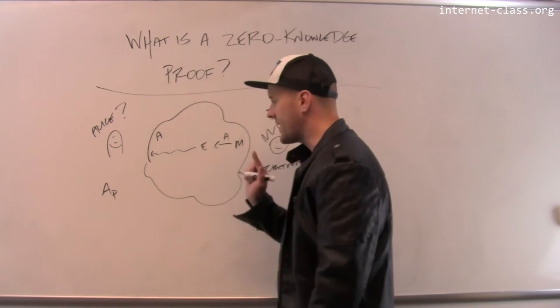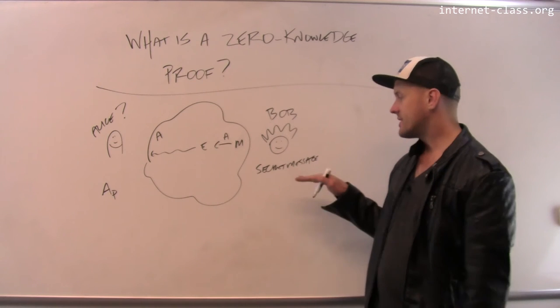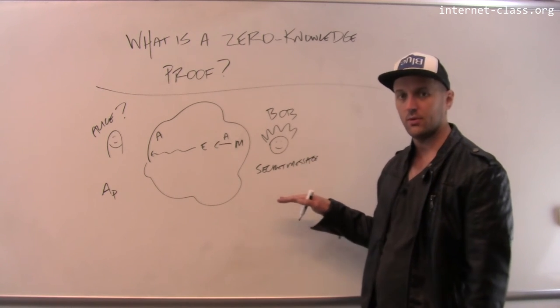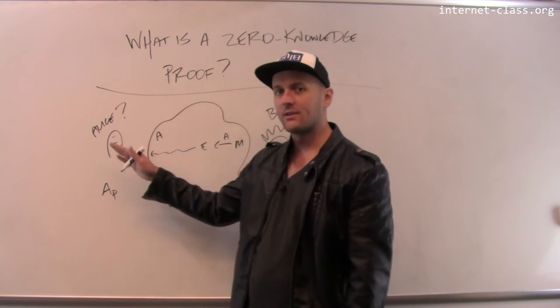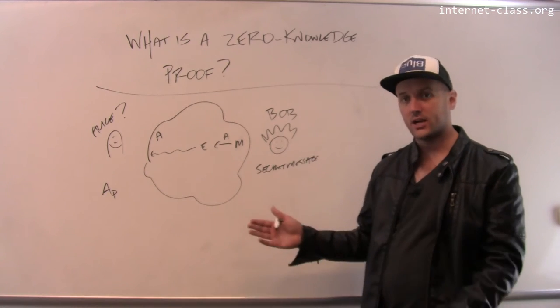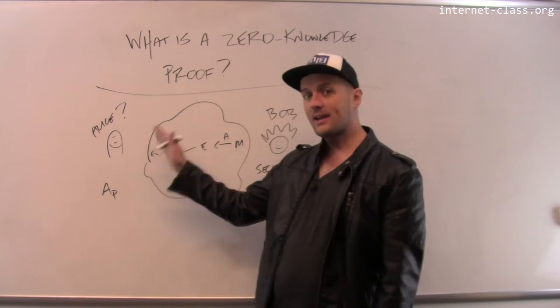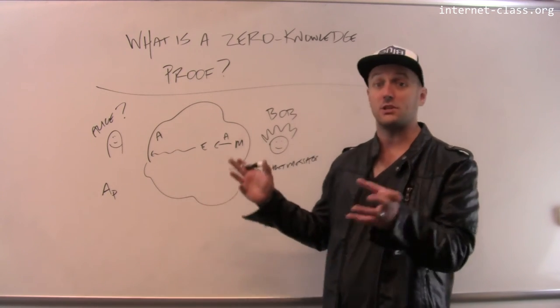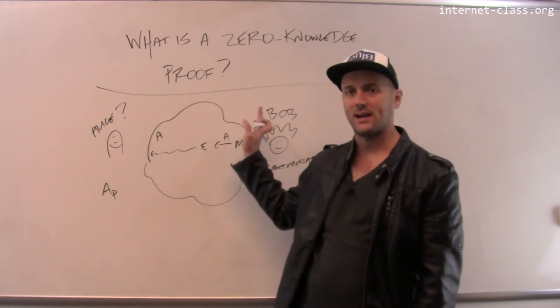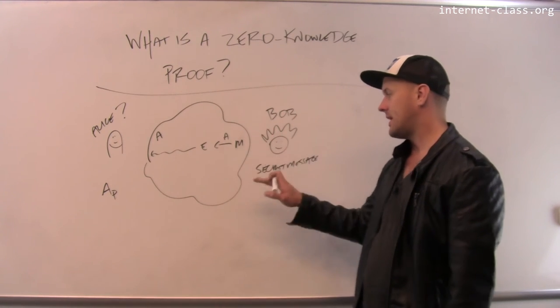Now remember, if Alice knows her private key, she can decrypt this message. So if it's really Alice, Alice will be able to take her private key, decrypt the message and send back, and of course we don't want this to actually be a secret message because she's going to send it back in clear text, she would send back to Bob secret message.